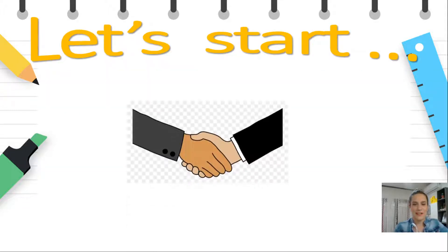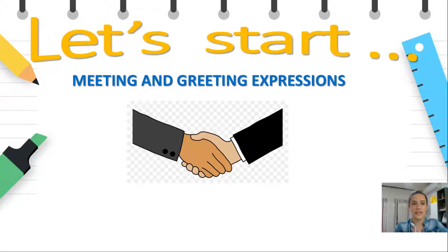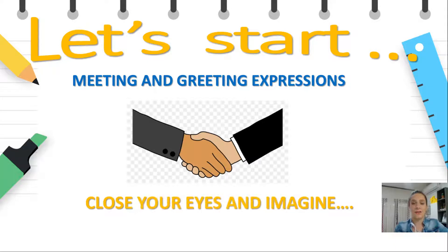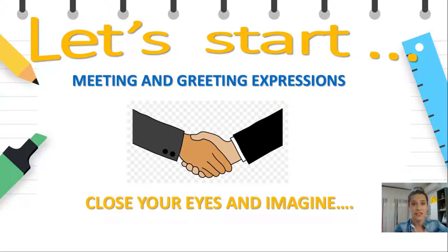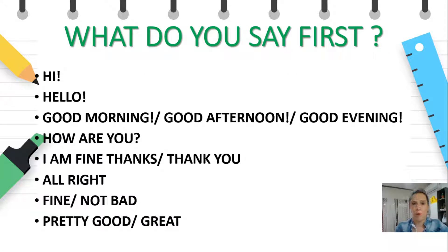Let's start! As we said, today's lesson is called Meeting and Greeting Expressions. As a first activity, I would like you to close your eyes and imagine a situation. Close your eyes and imagine that you're meeting someone. What's the first thing that comes to your mind when you meet someone — someone that you know or someone that you don't know? What's the first thing you say? Probably you guessed right: hi, hello, good morning if it's morning, good afternoon, good evening.